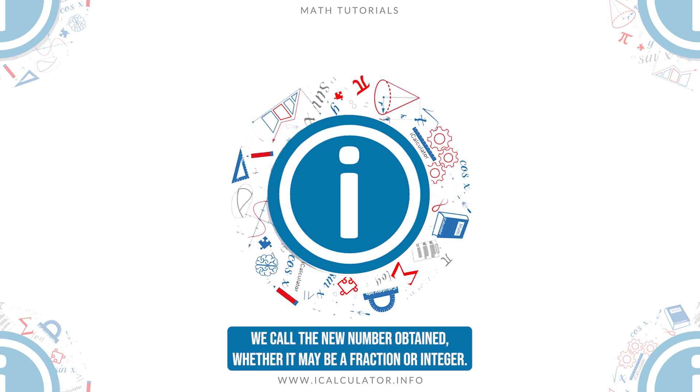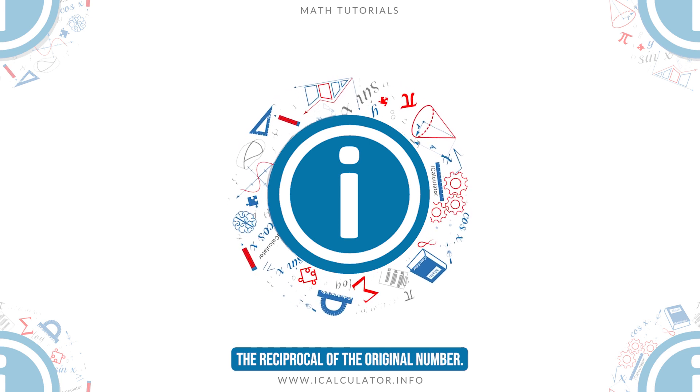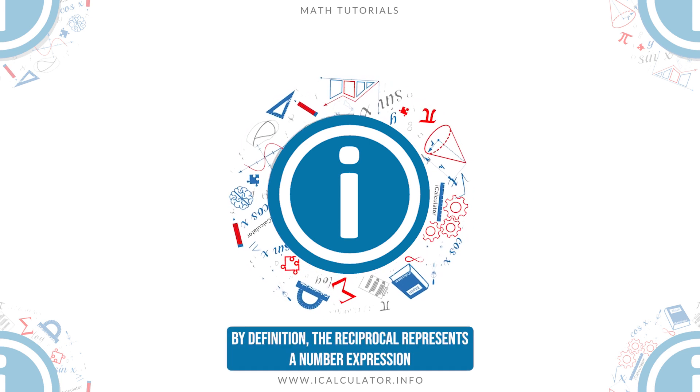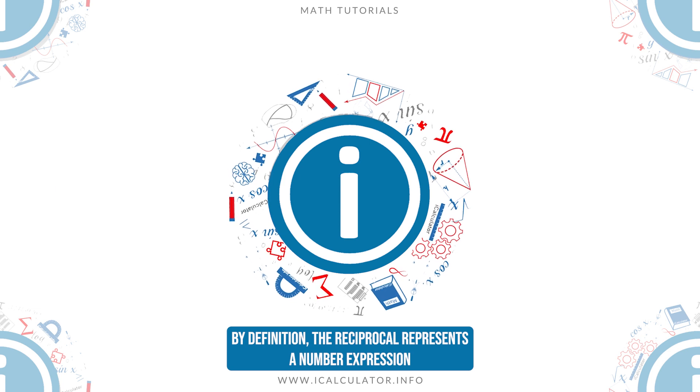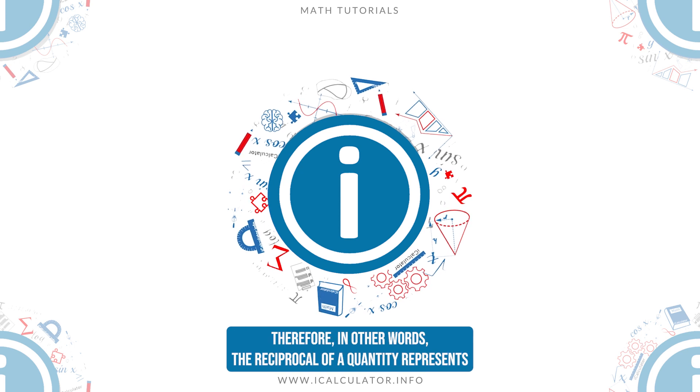We call the new number obtained, whether it may be a fraction or integer, the reciprocal of the original number. By definition, the reciprocal represents a number, expression, or function so related to another that their product is unity, 1.